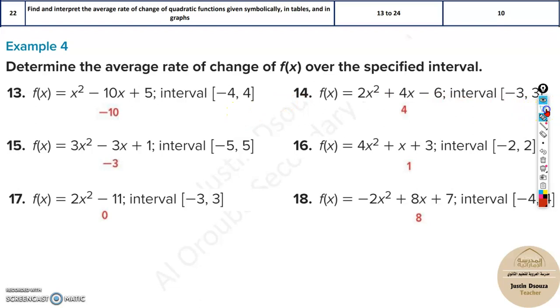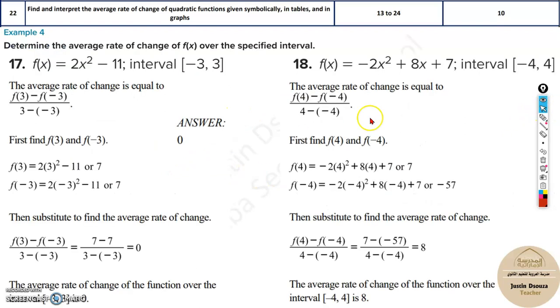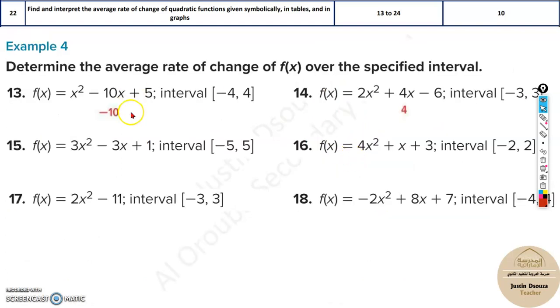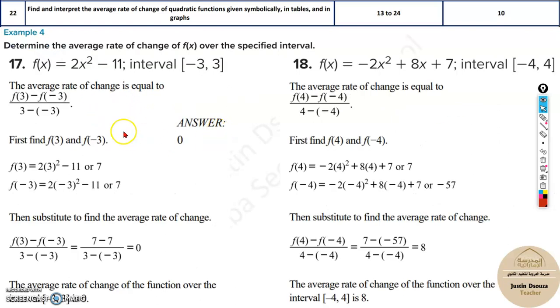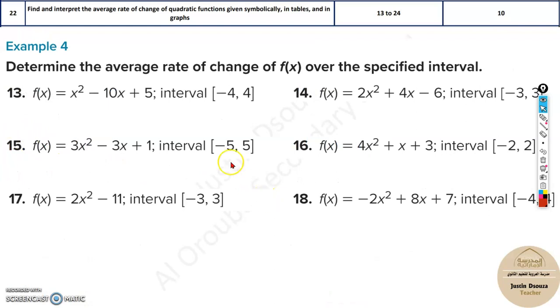But still, solve it using the formula: f(x2) minus f(x1) divided by x2 minus x1. Solve it yourself because you need to write the steps. The formula must be written, the substitution must be written, and then the answer. But double-check the answer with the b values of the quadratic functions. Thank you.